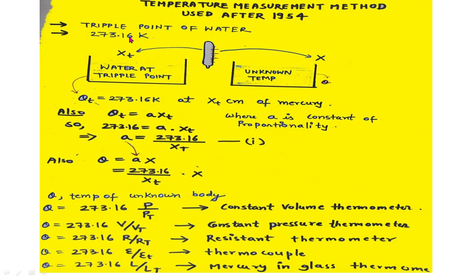Based on this assigned value of 273.16 Kelvin, we will find out the temperature of an unknown body. Let us now discuss the method of measurement. In this method, the temperature measuring instrument having some thermometric property is placed in contact with water at the triple point.